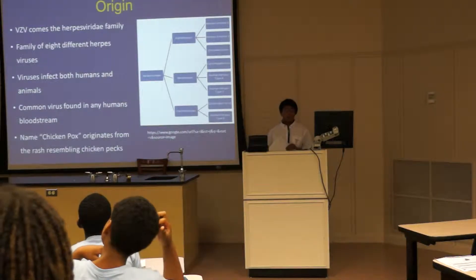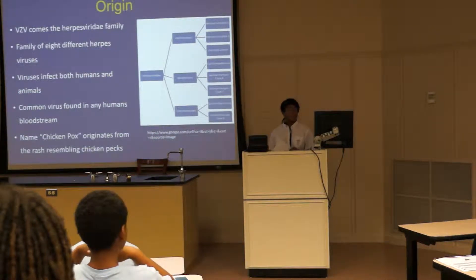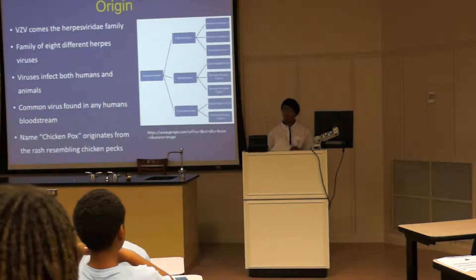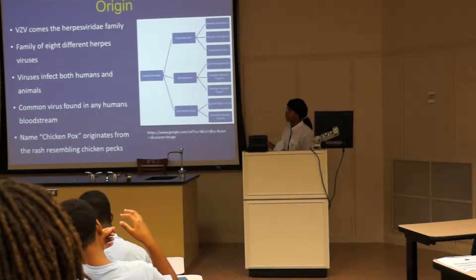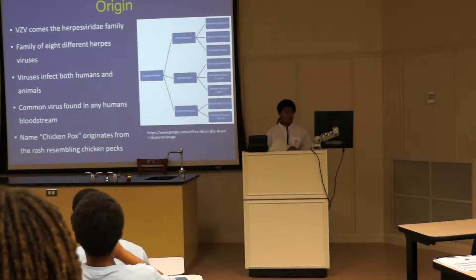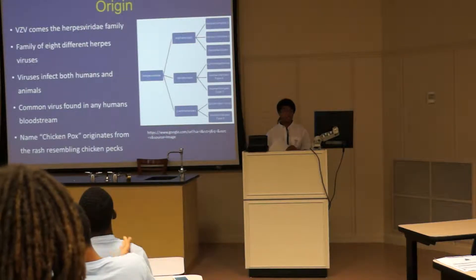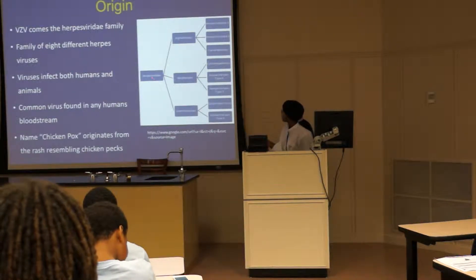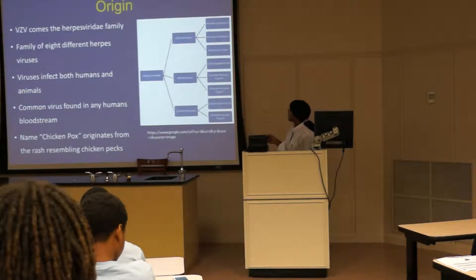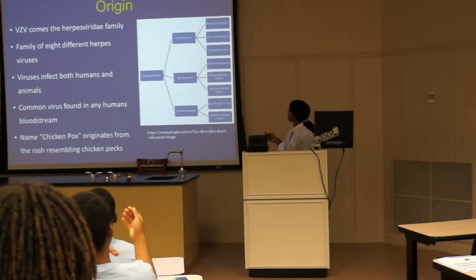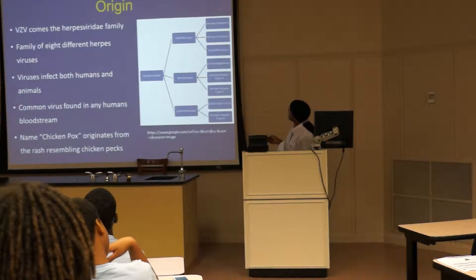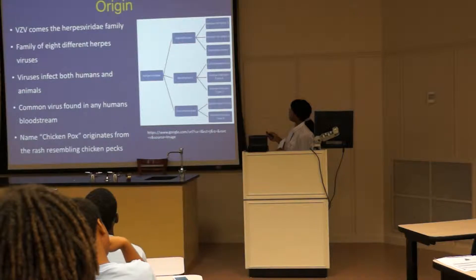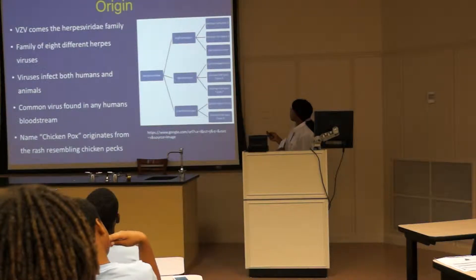Origin. Varicella-Zoster Virus comes from the Herpesviridae family. It is a family of eight different herpes viruses. The viruses can infect both humans and animals. However, Varicella is only found in humans. It is a common virus found in any human bloodstream. The name chickenpox originates from the rash resembling chicken pox on the skin. Here is a diagram of the Herpesviridae family. These are the three subfamilies: alpha herpes, beta herpes, and gamma herpes. Varicella-Zoster Virus is located in alpha herpes, and alpha herpes differentiates from the two other subfamilies because it reproduces faster.